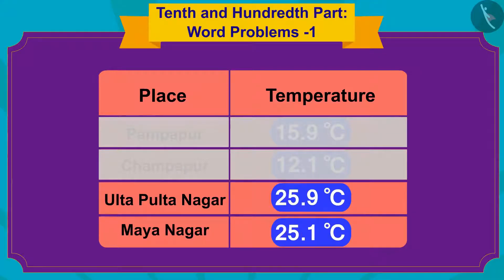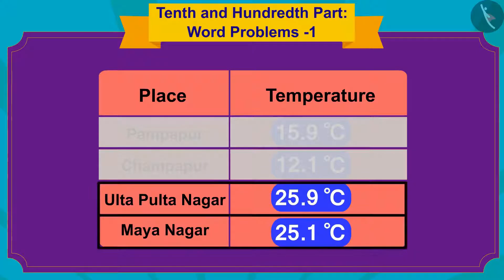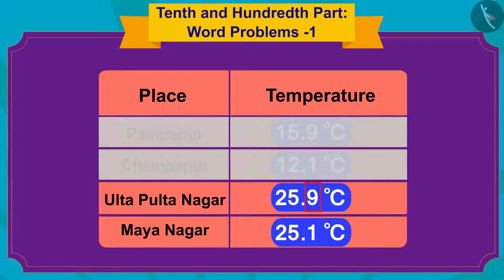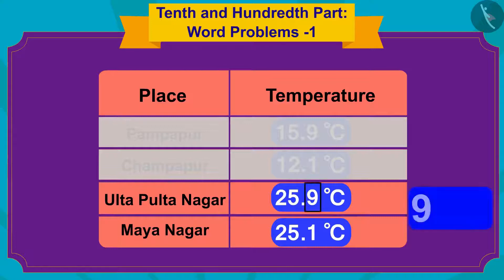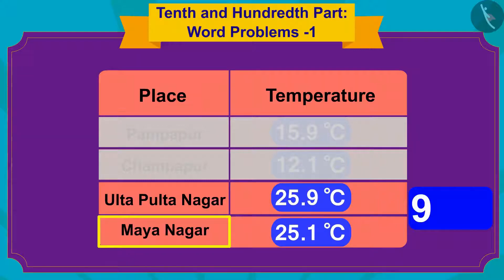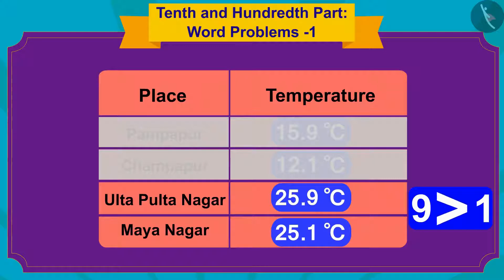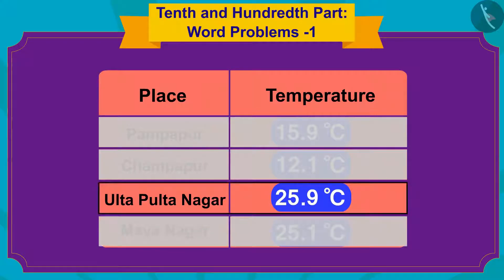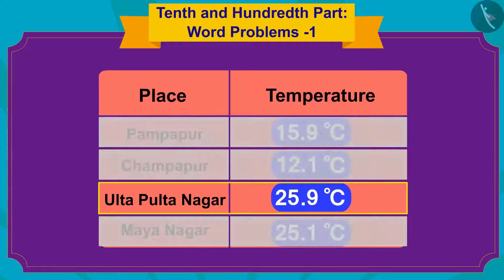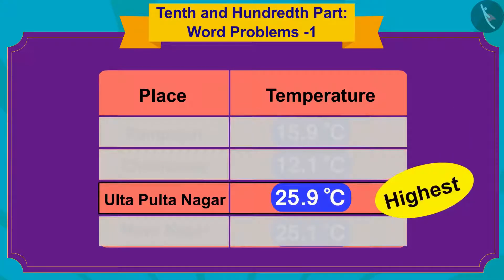Therefore, we will now compare the numbers written in the 10th places after the decimal point in the temperatures of these two places. The number in the 10th place in the temperature of Ulta Pulta Nagar is 9 and that in the 10th place of Maya Nagar is 1. Since 9 is more than 1, we can say that the temperature of Ulta Pulta Nagar is the highest among all these places.